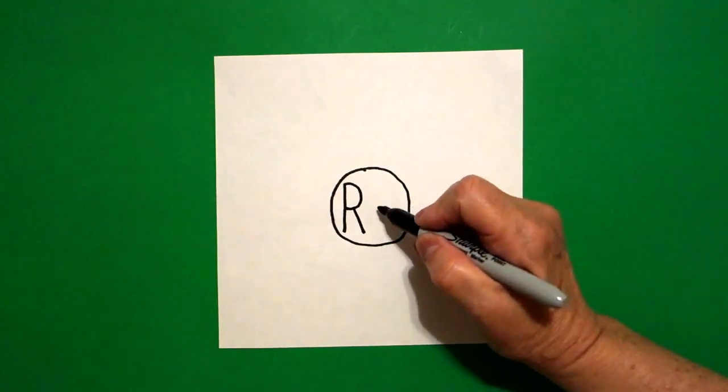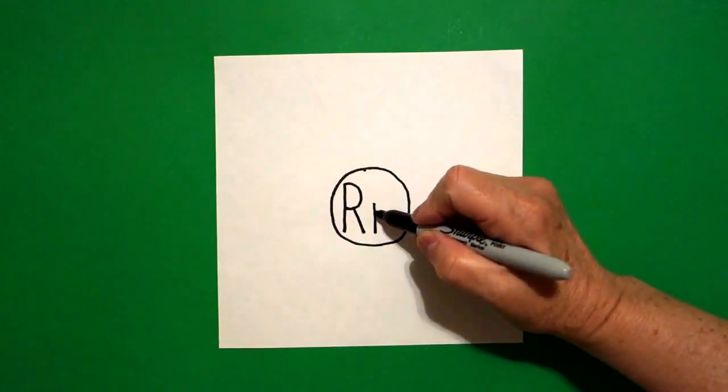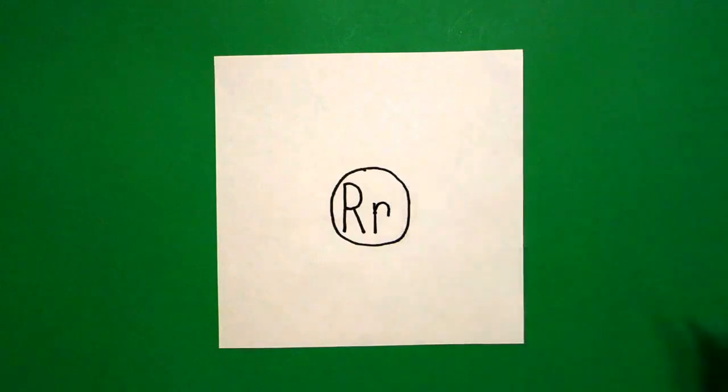Right next to it, I'm going to do a lowercase R. Straight line down, come back up to the top, right here at this space, curve line out.